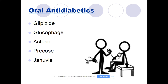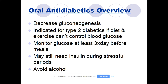Oral antidiabetic agents include glipizide, glucophage, Actos, Precose, and Januvia. Most of them work by decreasing gluconeogenesis. They are indicated for type 2 diabetics if diet and exercise can't control blood glucose levels. We need to monitor blood glucose at least three times a day before meals. Some of these patients may still need insulin during stressful periods such as hospitalizations. Avoid alcohol when taking these medications.